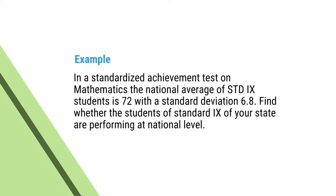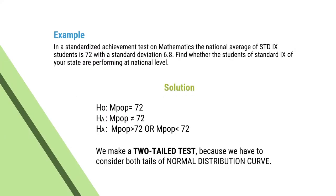Let us understand this concept with our previous example. In a standardized achievement test on mathematics, the national average of students of standard 9 is 72 with a standard deviation of 6.8. Find whether the students of standard 9 of your state are performing at the national level. The null hypothesis H0 states that the population mean is equal to 72 — there is no significant difference between the sample mean and the population mean. The alternate hypothesis states that the mean of the population is not equal to 72. Not equal to 72 means it may be greater than 72 or it may be less than 72. We make a two-tailed test.